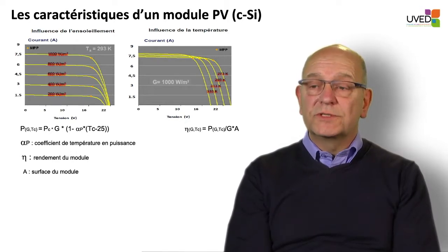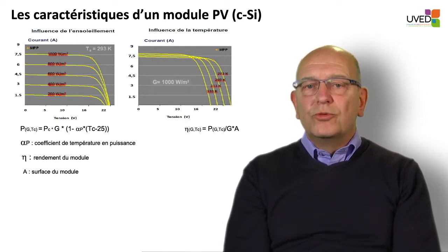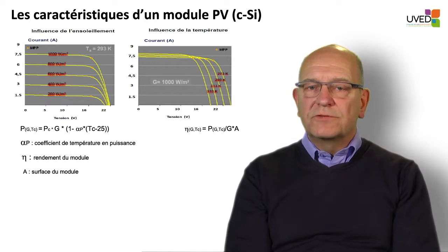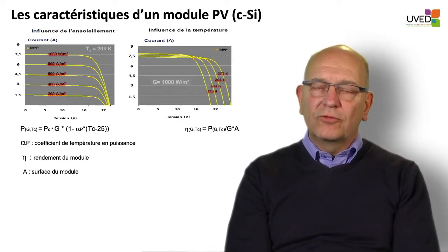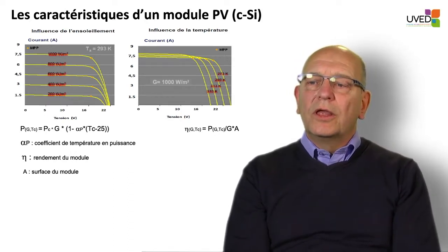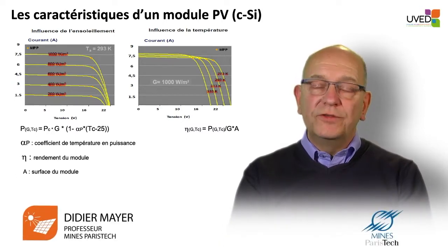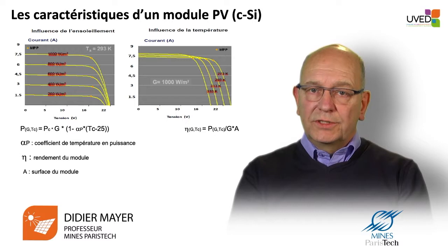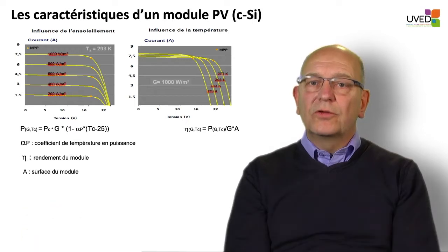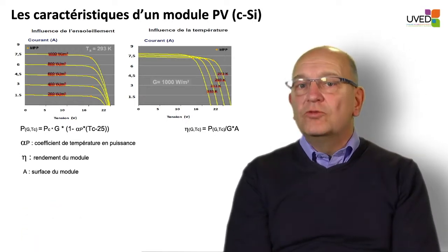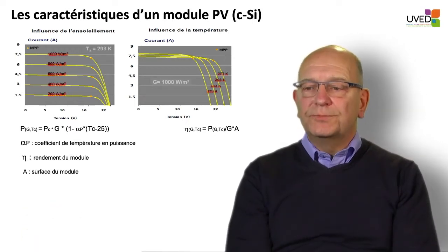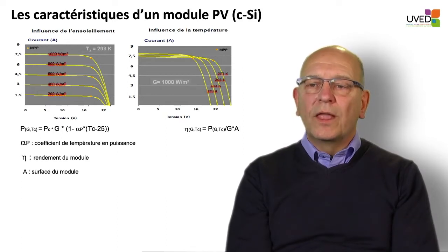The voltage is not very sensitive to sunshine. For a given amount of sunshine, power will decrease depending on the temperature. This drop is materialized by a coefficient, which is specific to the technology.